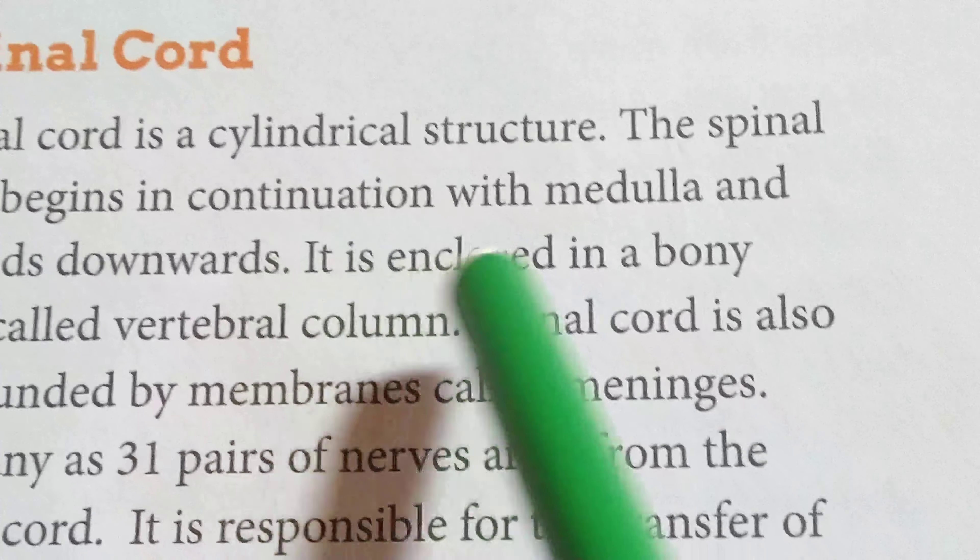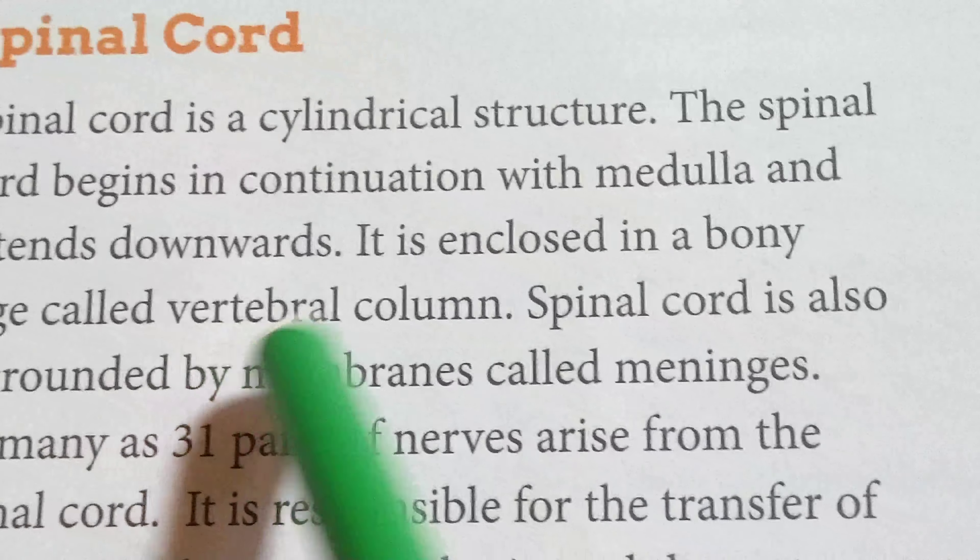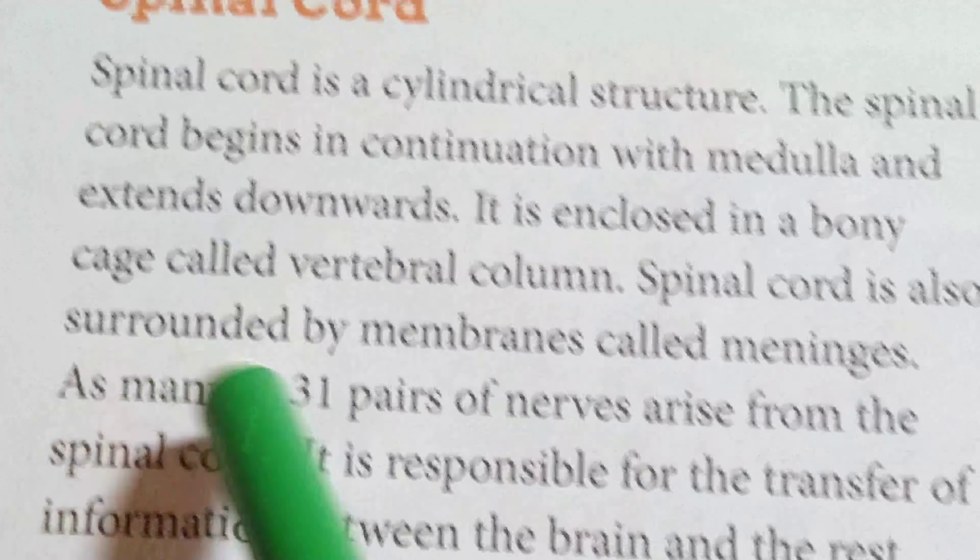The spinal cord is a cylindrical structure. It begins in continuation with the medulla oblongata and extends downwards. It is enclosed in a bony cage called the vertebral column, which is a bony structure that extends through the whole body.